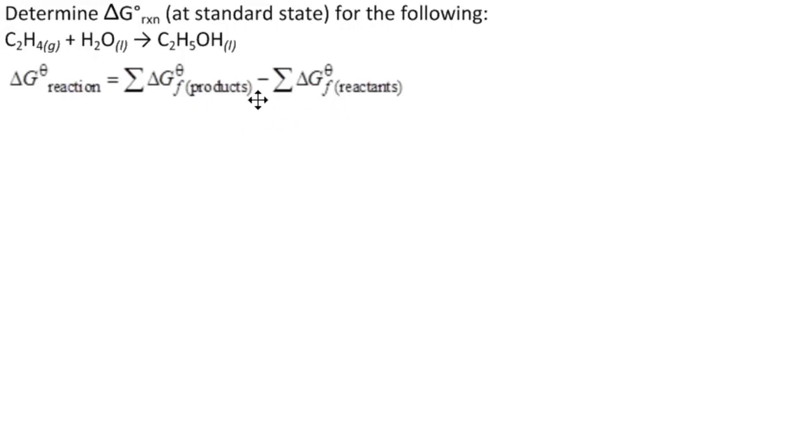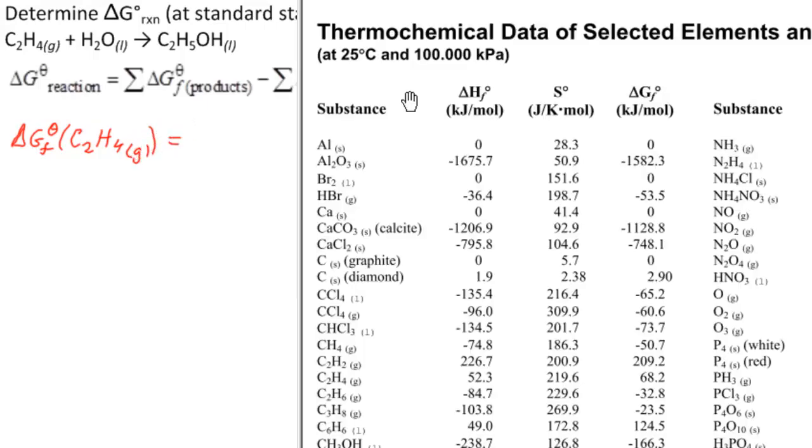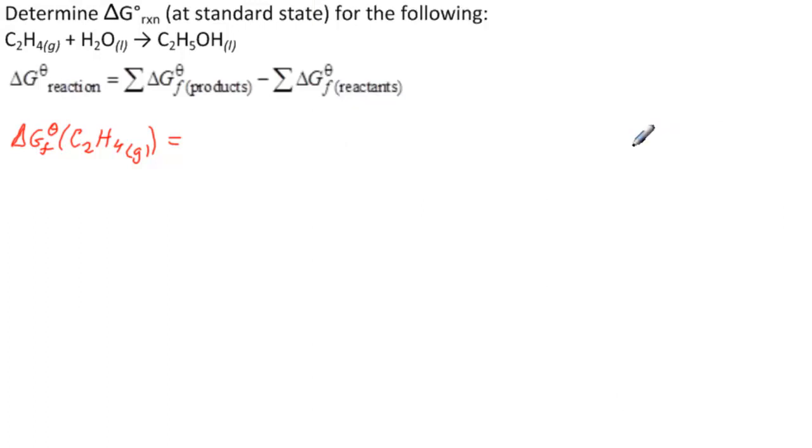Now, we get these from tables. Let's find the first one, which would be ΔG°f of C2H4 gas. Here's our table. Here's what we're looking for, ΔG°f. And C2H4 is right here, gas. We go over to there: 68.2 kilojoules per mole.